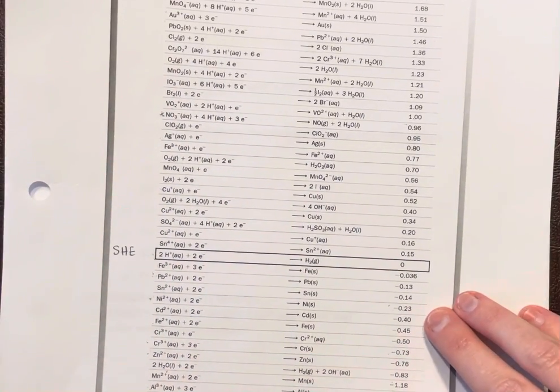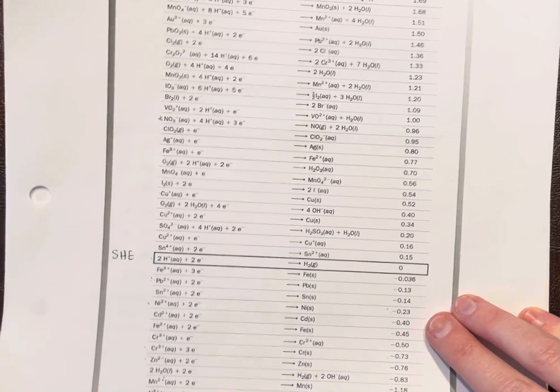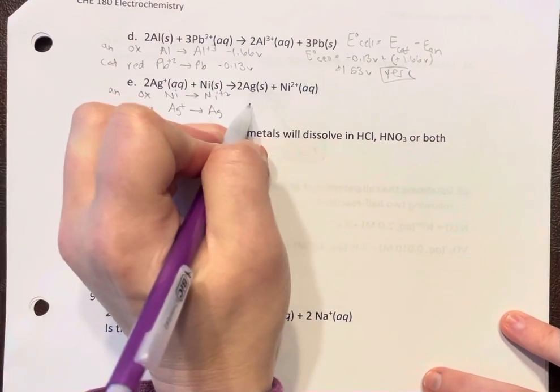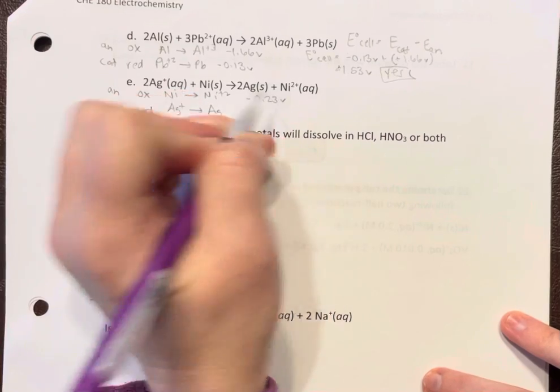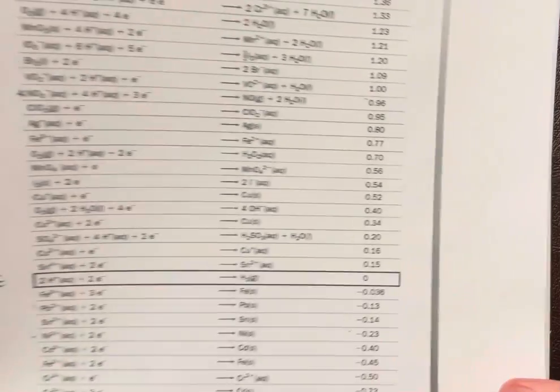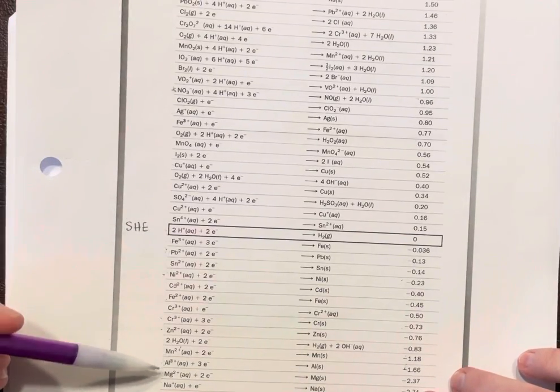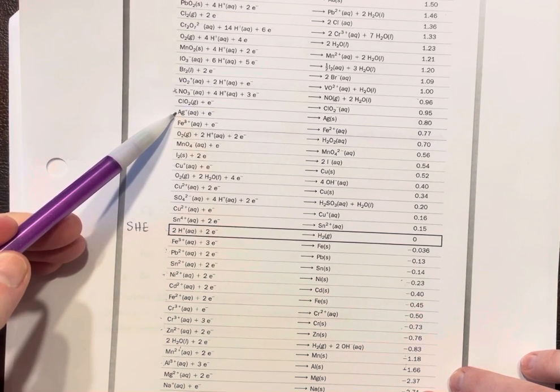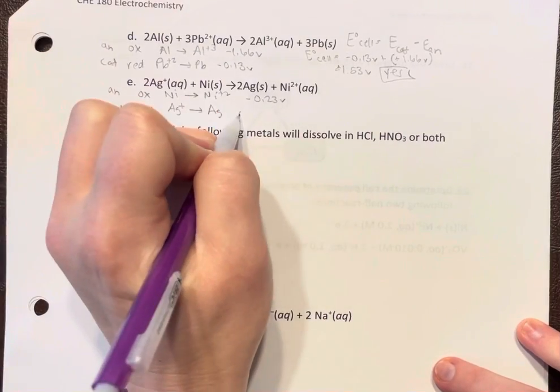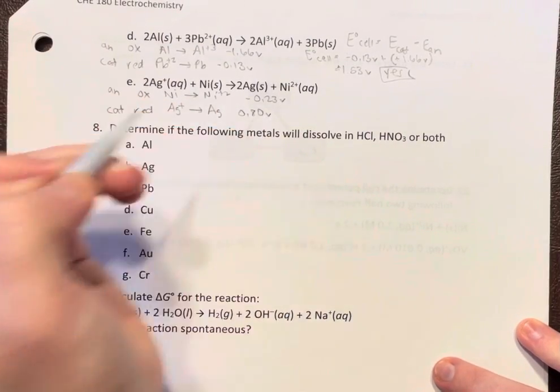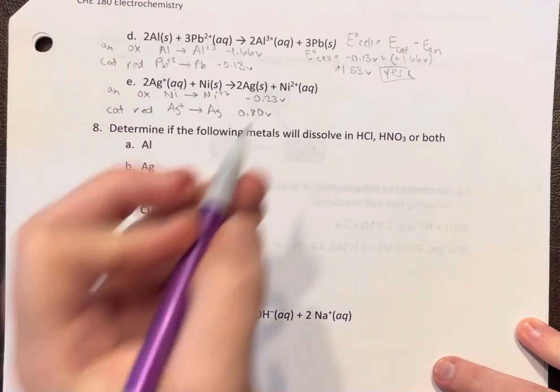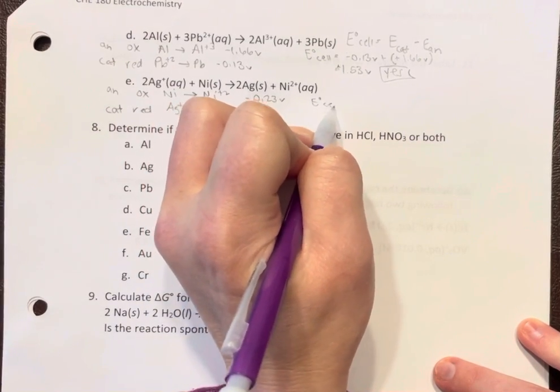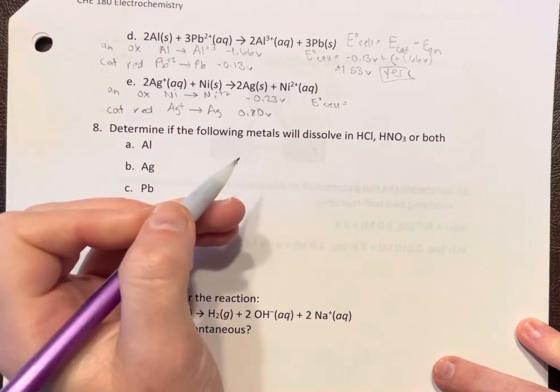All right, so we have nickel at negative 0.23 and our cathode way up here at 0.80. All right, well the cathode is above the anode on the table, so that's good.